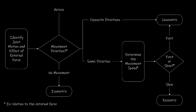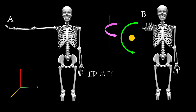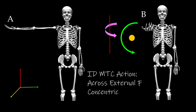Or the joint movement could be across the external force — in other words, they're occurring in different planes — in which case we would have a concentric MTC action. Returning to our example, the joint motion is going to be occurring in the transverse plane, but the effect of the external resistance is going to be in the frontal plane. So when we identify the MTC action, we determine that the joint motion is across the external force, therefore we conclude that we have a concentric MTC action.